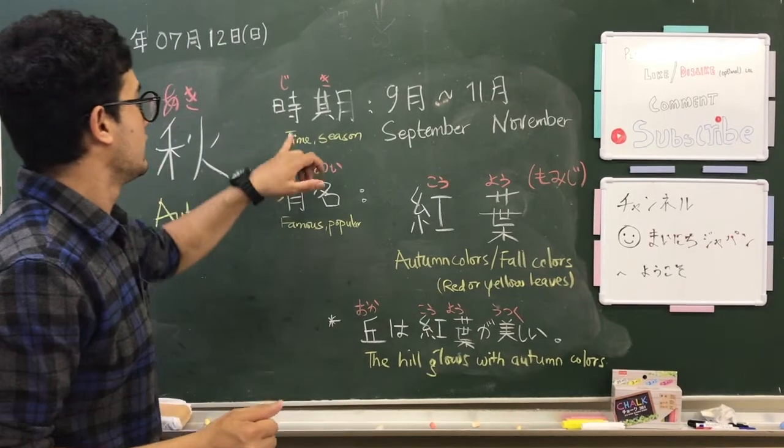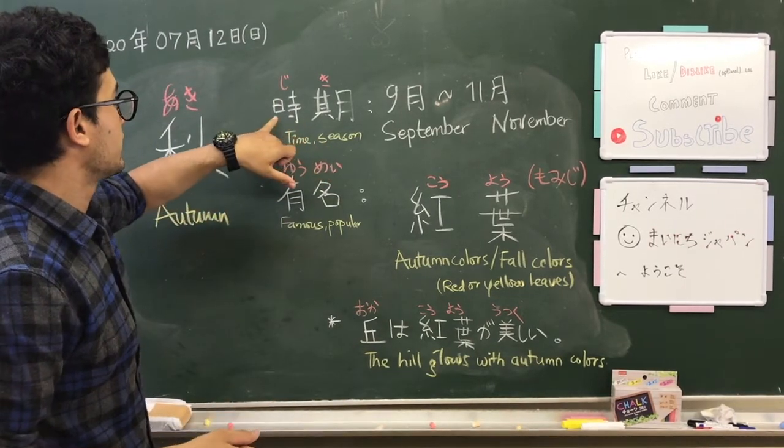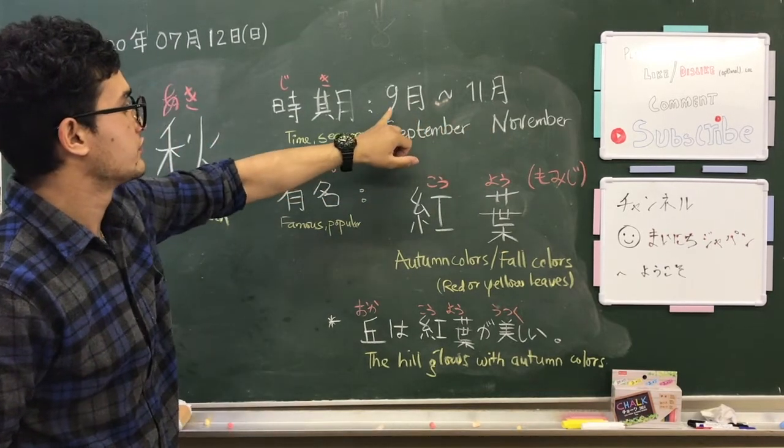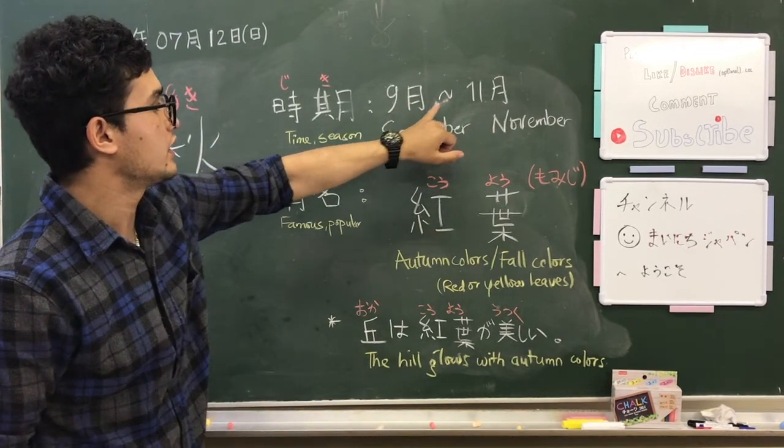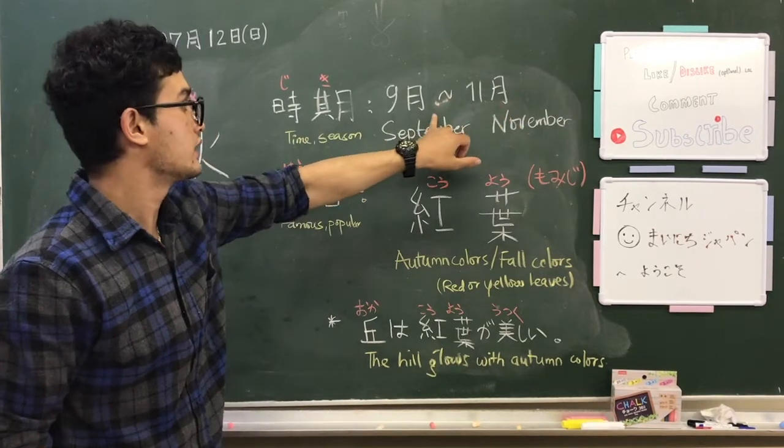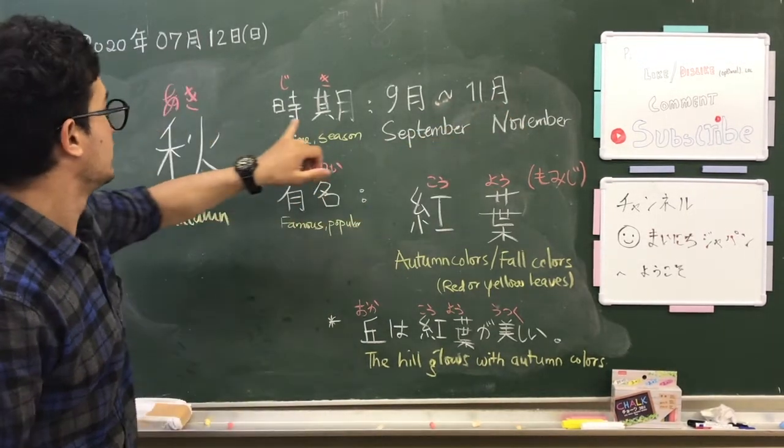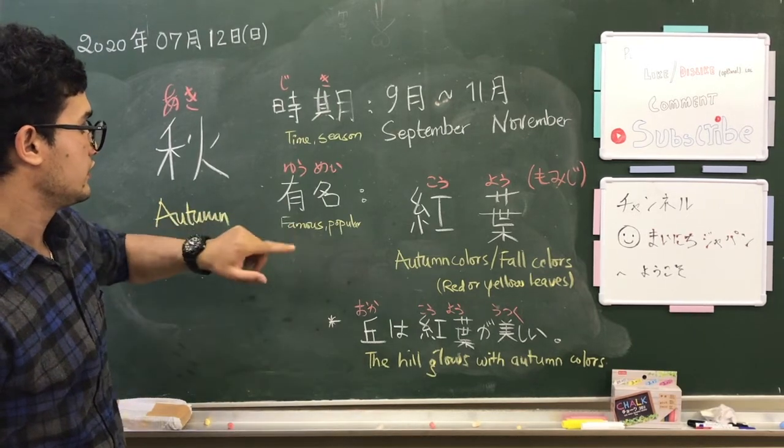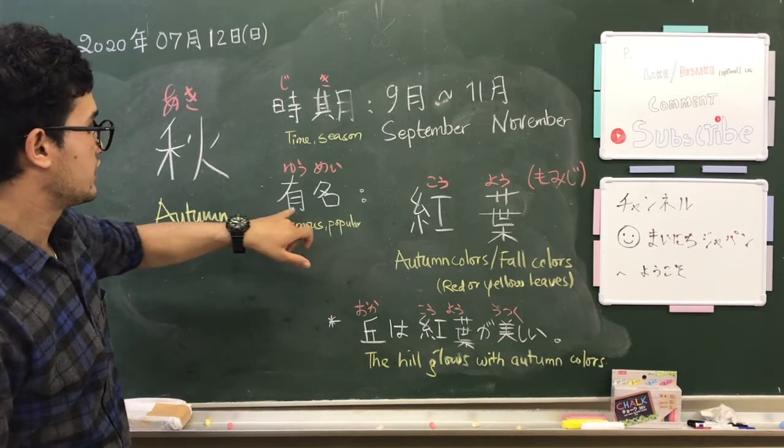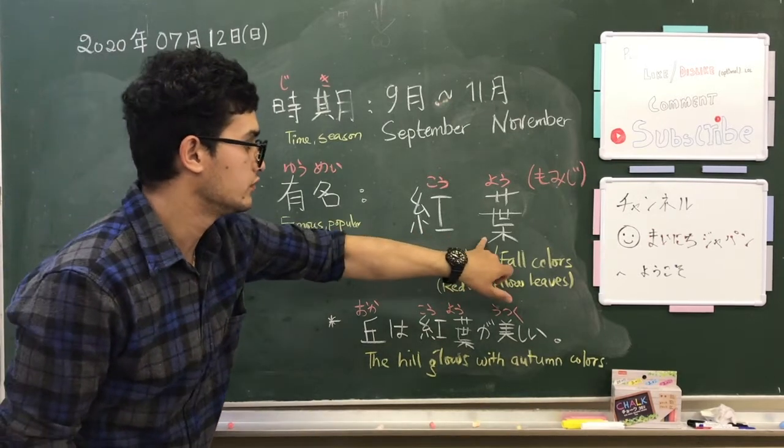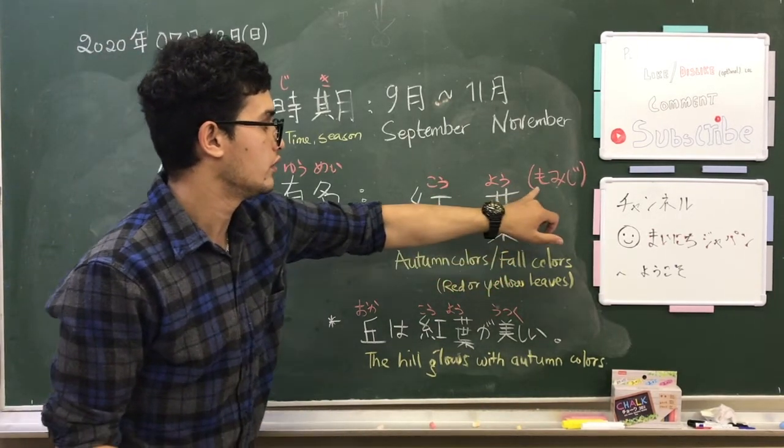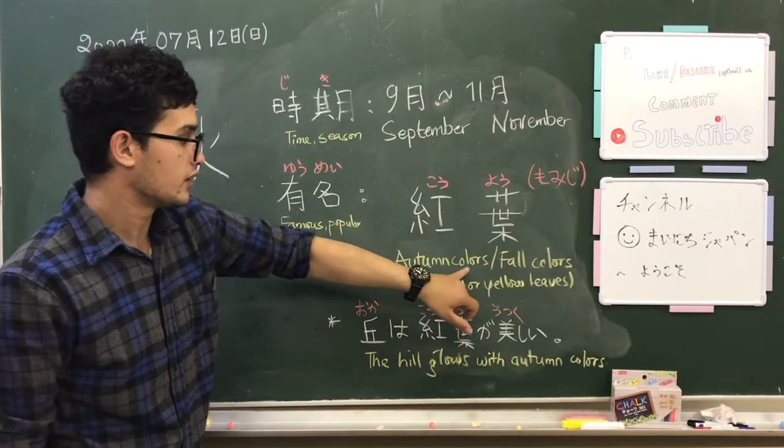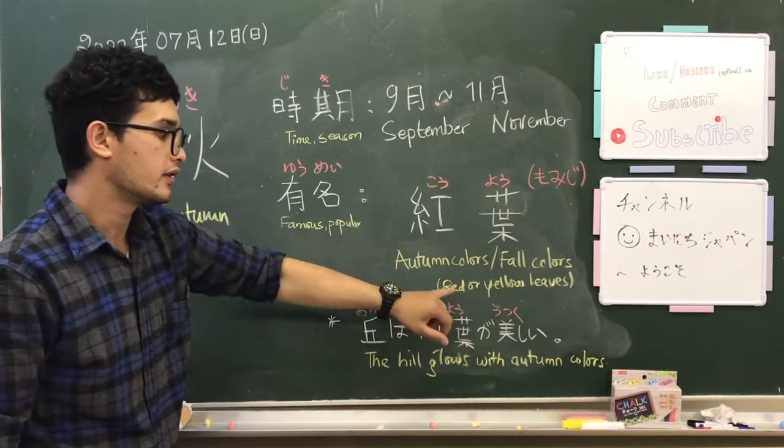Autumn, like we discussed before, starts in September and goes up to November - kugatsu kara juuichi gatsu made. It is also known as momiji, which means autumn colors or the fall colors or the red or yellow leaves.